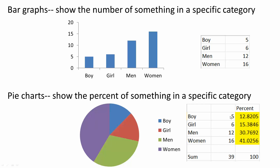Then we do 5 over 39 times 100 and we get this number. Likewise 6 over 39 and you get this number, until it adds up to 100%. From there you transform this information into a pie chart. For example, boys translate to 12.8% and women is 41%, right here. And that's pretty much the difference between a bar graph and a pie chart.